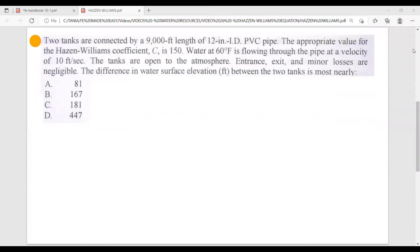Two tanks are connected by a 9000 feet length of 12 inch inside diameter PVC pipe. The appropriate value for the Hayes and Williams coefficient C is 150. Water at 60 degree Fahrenheit is flowing through the pipe at a velocity of 10 feet per second. The tanks are open to the atmosphere. Entrance, exit, and minor losses are negligible. The difference in water surface elevation between the two tanks is most nearly.